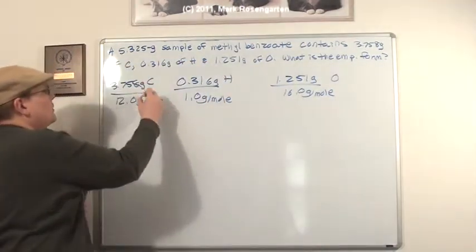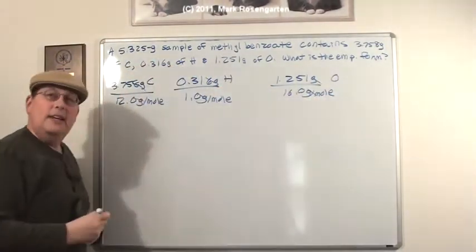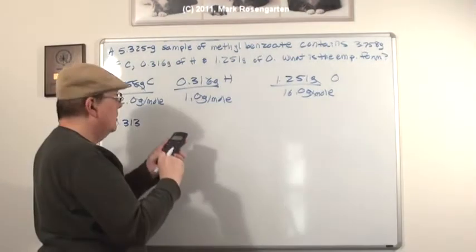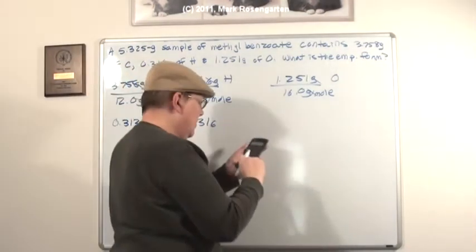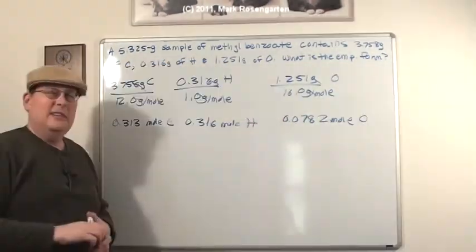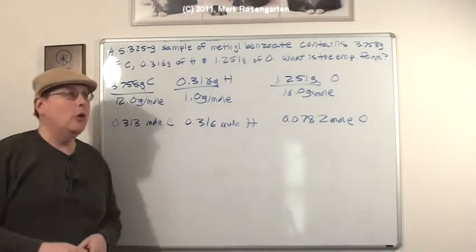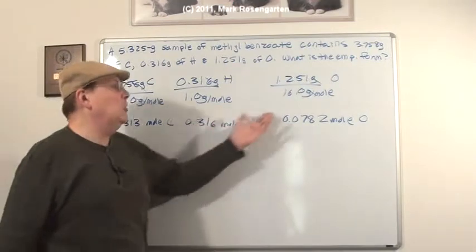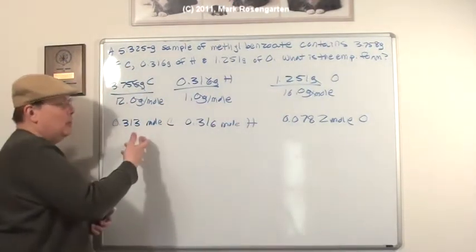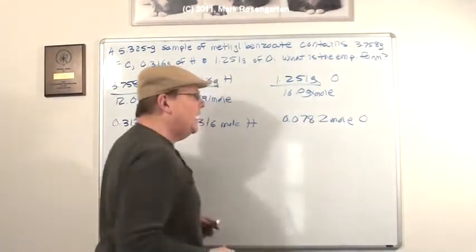When you do this, grams is going to cancel and leave you with moles of each element. It'll give you a mole ratio. Now we've got a mole ratio, but it's not really a whole number mole ratio. I mean, we're not going to really write the formula C.313, H.316, O.0782.